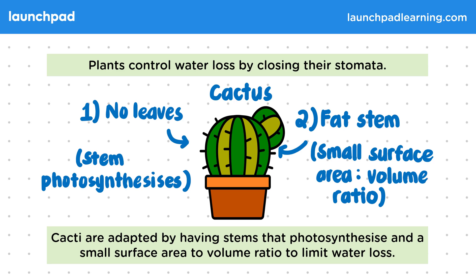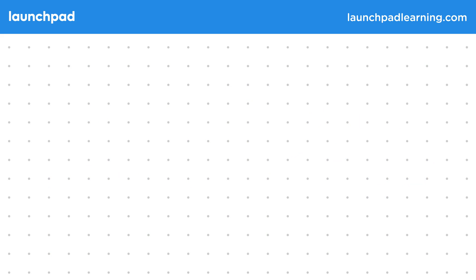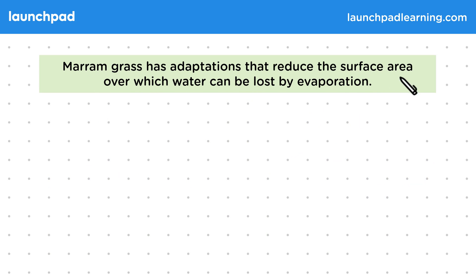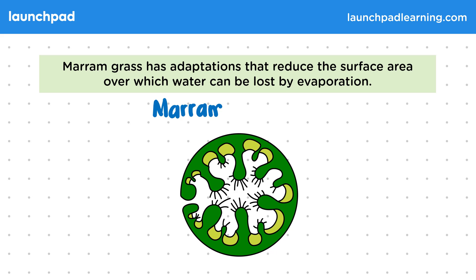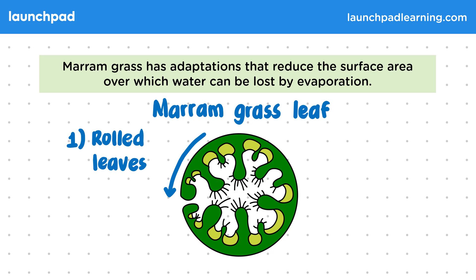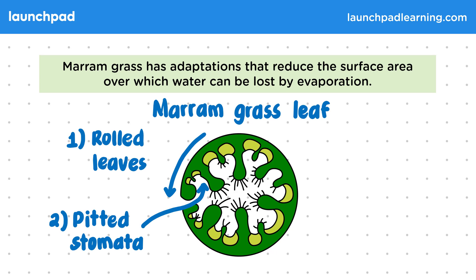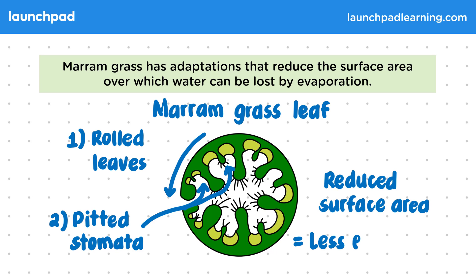What other adaptations do some plants have to reduce water loss? Marum grass has adaptations that reduce the surface area over which water can be lost by evaporation. This diagram shows a cross section of a marum grass leaf. Marum grass have rolled leaves which decrease the surface area that water can evaporate across. These leaves also have pitted stomata, where the stomata are sunk inside pits, to decrease the surface area for evaporation. A reduced surface area leads to less evaporation and therefore a lower rate of transpiration. So fat stems, a lack of leaves, and rolled leaves are examples of adaptations that plants might have to minimize water loss.